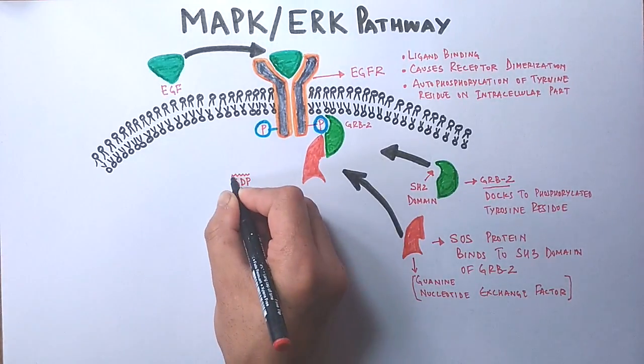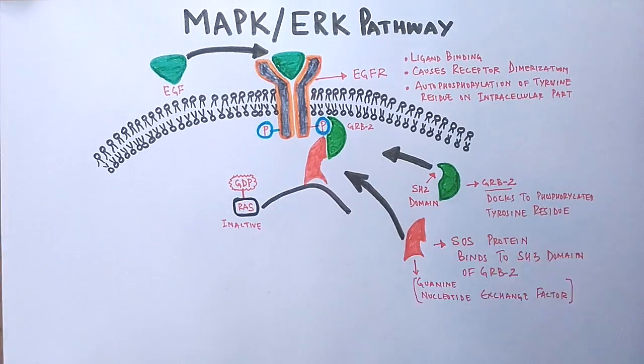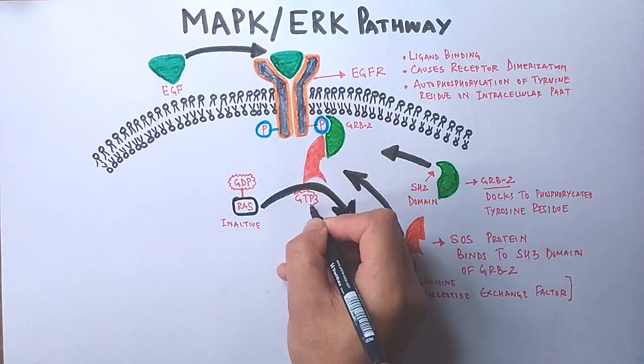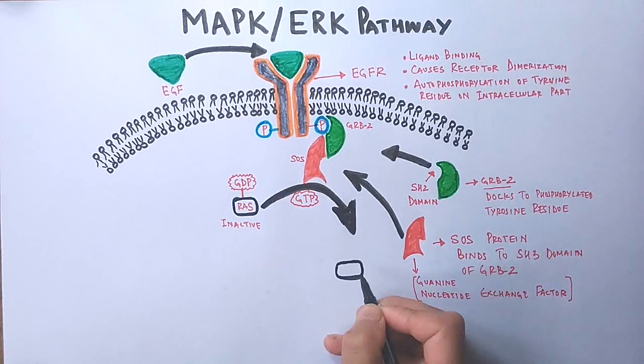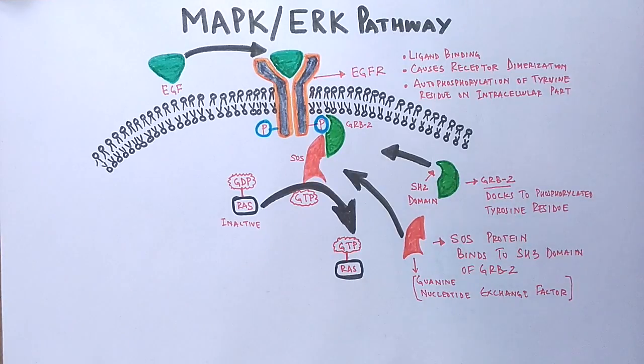Here in this case, this SOS acts on the RAS molecule which has GDP bound as shown in the diagram, so it's in inactive form. But this SOS replaces the GDP molecule with GTP on RAS, thus rendering this RAS molecule in its active form.